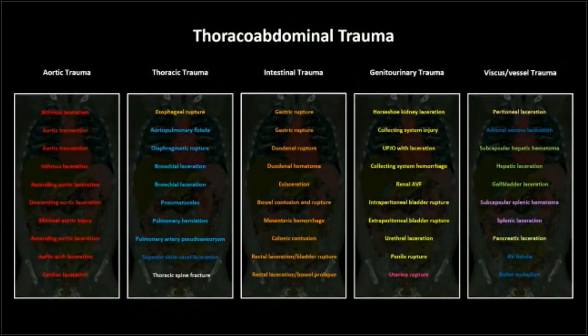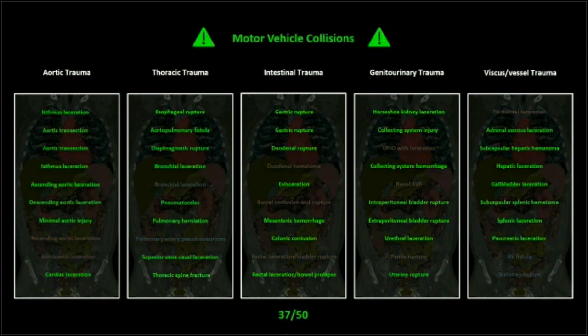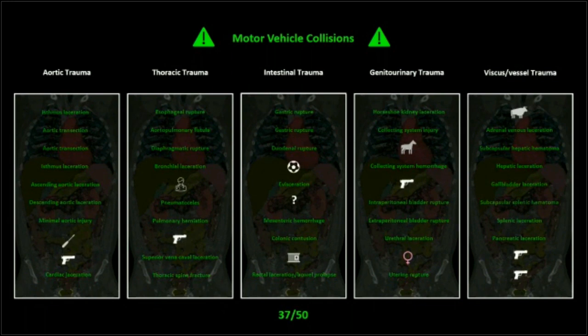I have broken things down into five basic organ segments. I know there are a lot of them — three years I've been working on this. I put some icons in so you can see some basic facts about every case. 37 of the 50 cases we'll look at are motor vehicle collisions, designated with that green triangle.